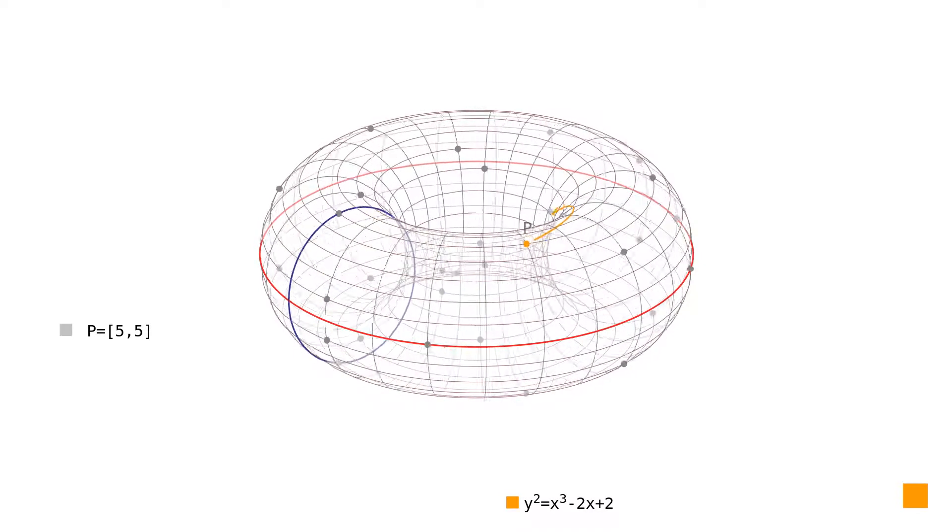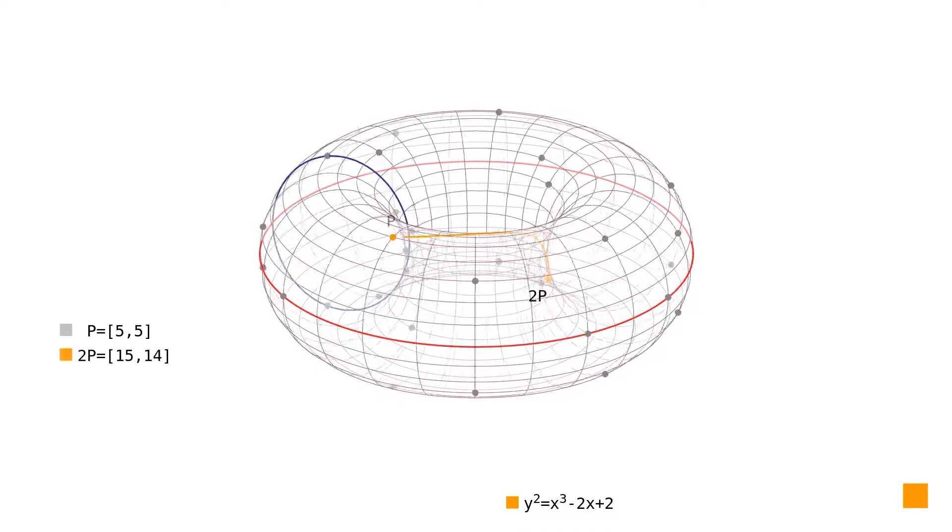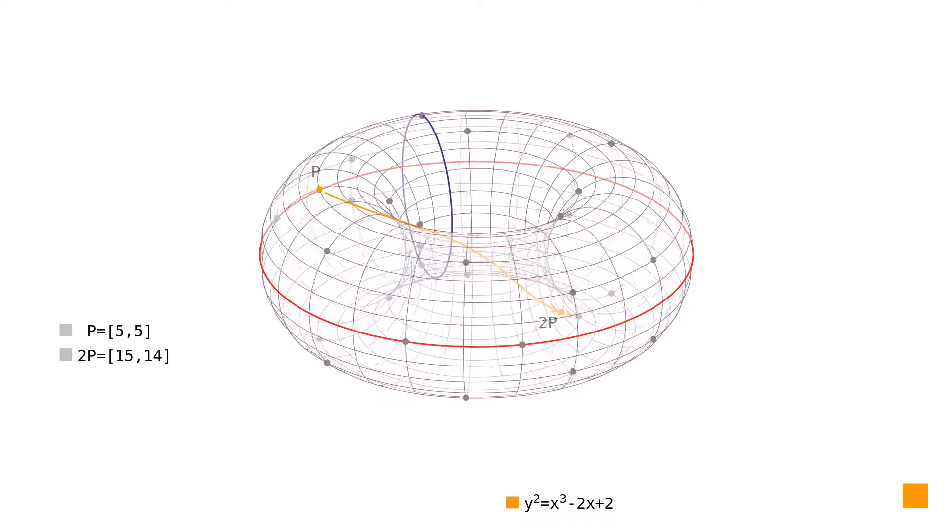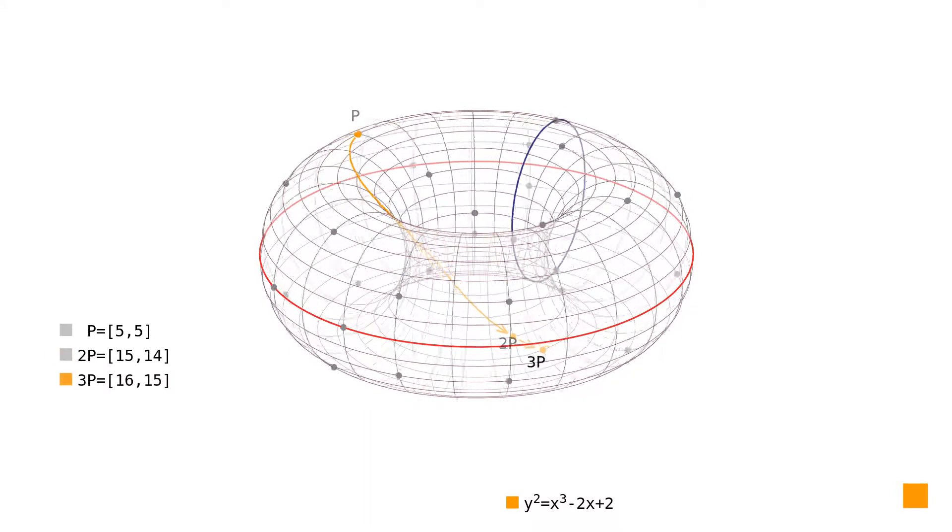First, by doubling it we get to the point 2P. Then we add the original point P to this intermediate result and get the point 3P.